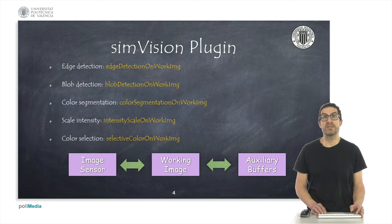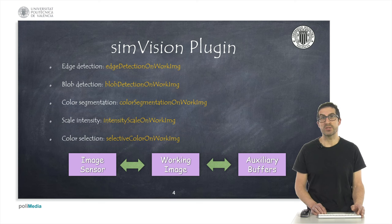The SimVision plugin includes a set of functionalities to detect objects in images. Although it is quite limited, it is useful to detect edges, blobs, segment by color, among other few features. Here I show you some of the functions that I consider more relevant in many of the standard applications.